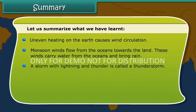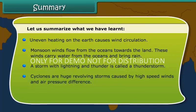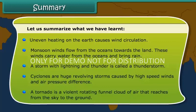A storm with lightning and thunder is called a thunderstorm. Cyclones are huge revolving storms caused by high-speed winds and air pressure difference. A tornado is a violent rotating funnel cloud of air that reaches from the sky to the ground.